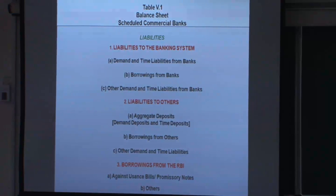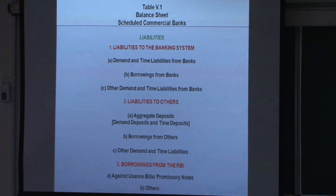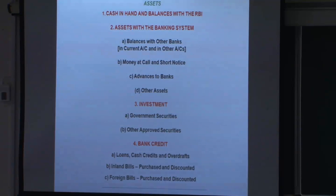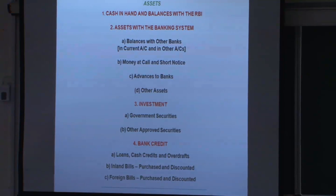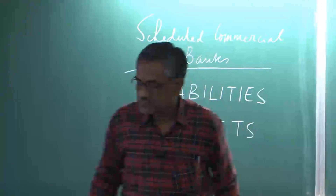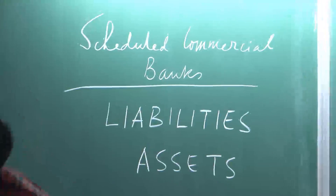Now I come to the assets, which is more complicated. Let us come to the commercial bank assets. Here there are four red-alphabet titles. You can read the slide and understand some of them by common sense. Assets of the scheduled commercial banks — whether a regional rural bank or any commercial bank, public or private — this is a standard format created by the RBI, who also collects and keeps data under these heads.